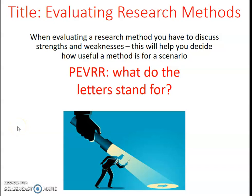Hi there. This is a lecture for GCSE Sociology students looking at how to evaluate research methods. When evaluating research methods you have to discuss the strengths and weaknesses of that method using the issues we're going to discuss today. If we look at the acronym P-E-V-R-R, those letters stand for the things you'll use to evaluate the method — practical, ethical, validity, reliability, and representativeness — to decide whether a method is or isn't useful.